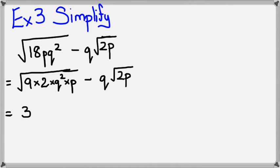Now I could take square root of 9, which is 3, and I could take square root of q squared, which is q, which means the two things that I have left over are square root of 2 and p itself. And of course this minus q square root of 2p.